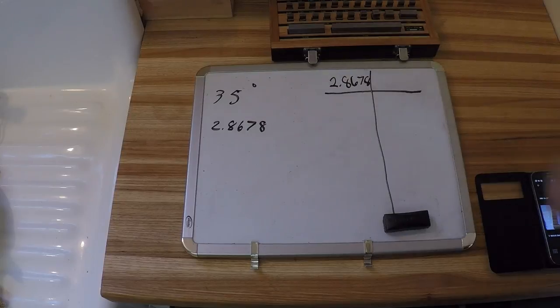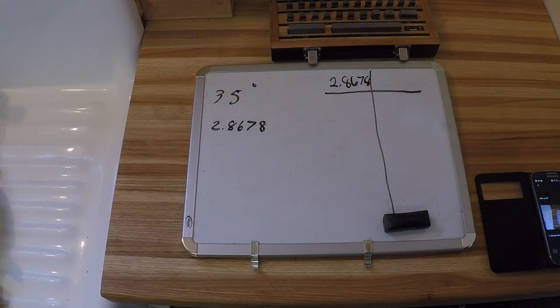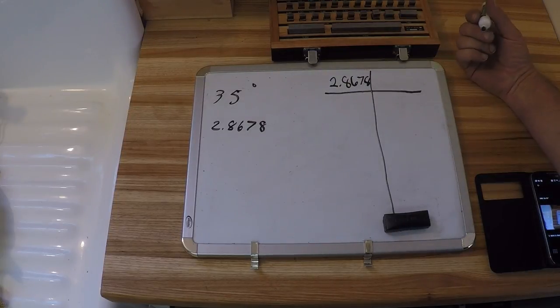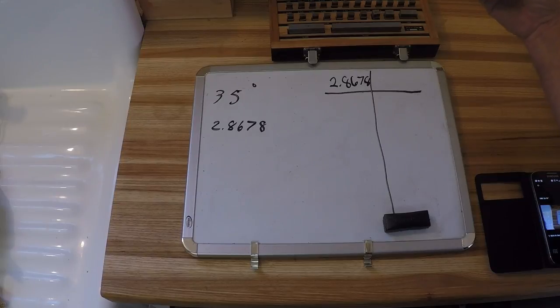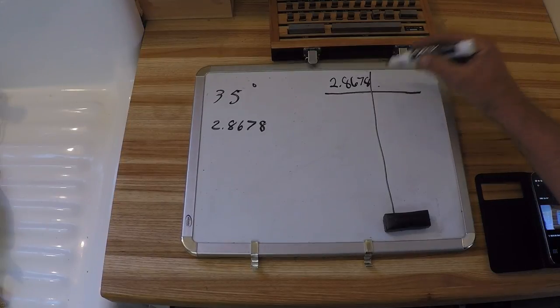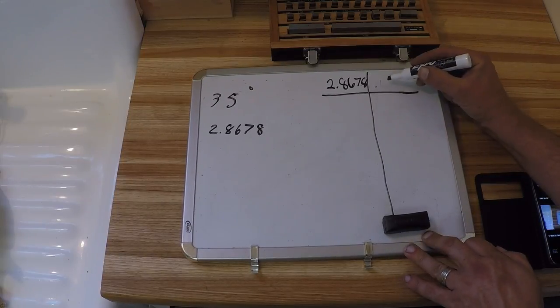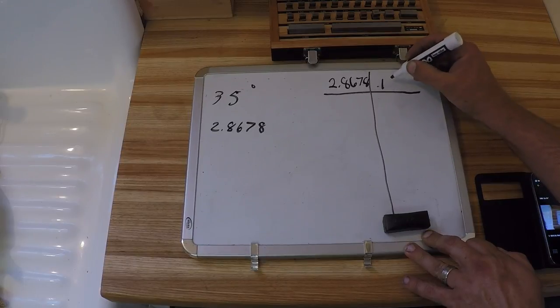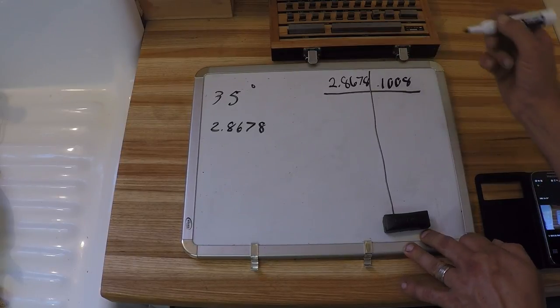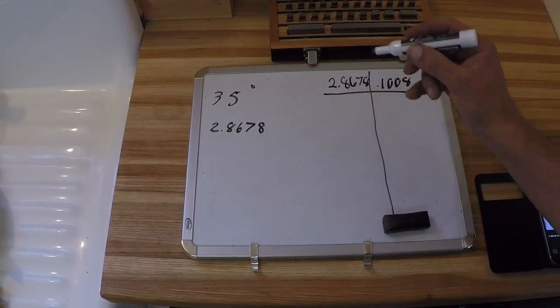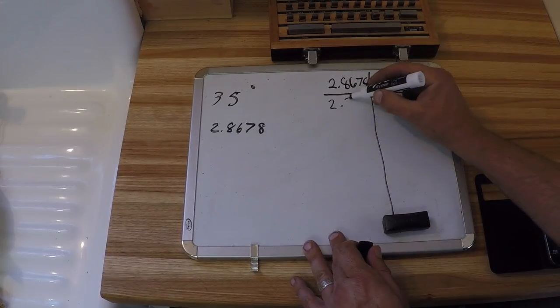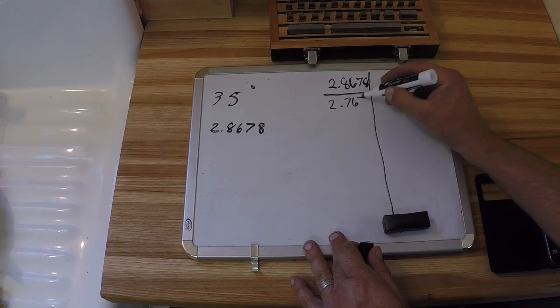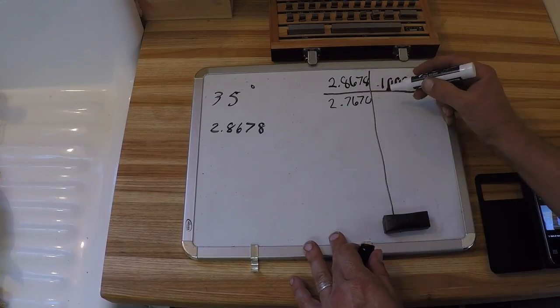So the only block I have is 0.1, or 100 thousandths. It's 0.1008. So 0.1008, and we subtract that from here. That leaves us 2 inches, 767.